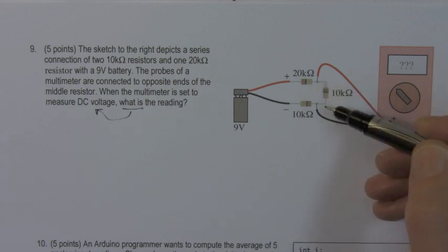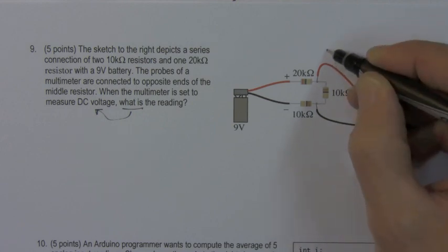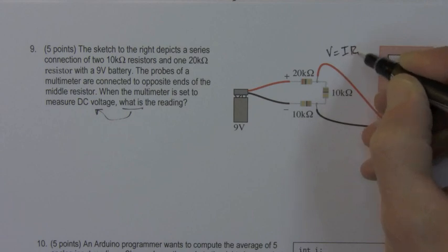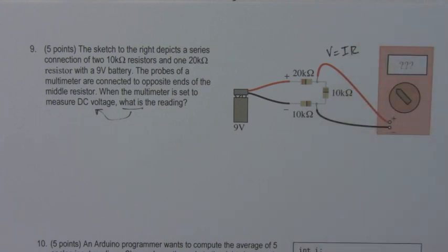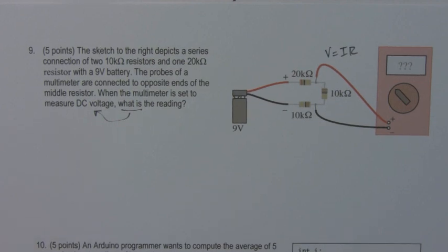Well, if we know the current through this resistor, we just apply Ohm's Law. In other words, we have V equals IR for each of these resistors. So let's find the equivalent resistance of the circuit.